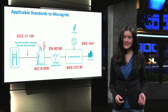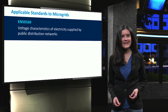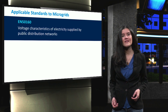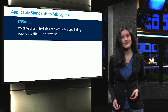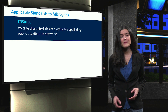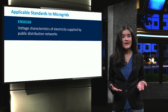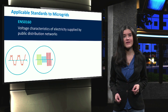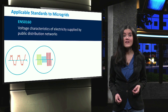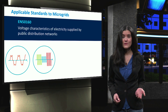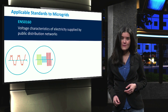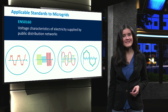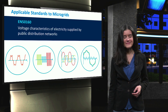In particular, EN50160 is an important standard for voltage characteristics. It provides information on power quality, frequency, and voltage variations such as voltage sag and swell, unbalanced voltage, and current flows and harmonics in microgrids.